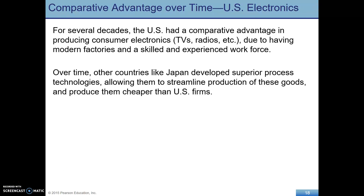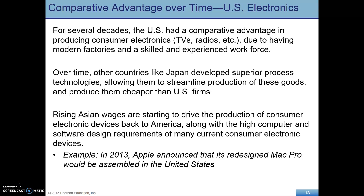Comparative advantage also changes over time. For a long time the U.S. had the comparative advantage in consumer electronics like TVs and radios, but now giants like Sony (Japanese) and Samsung (Korean) dominate. As wages rise in Japan and Korea, some consumer electronics production is returning to the U.S. — in 2013, Apple announced that the Mac Pro would be assembled in the United States. Comparative advantage changes over time.